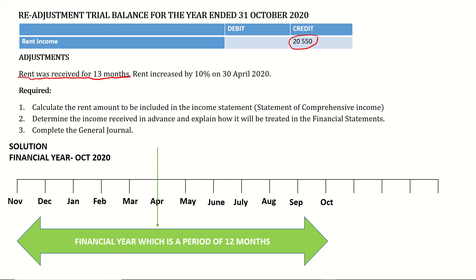Rent was increased by 10 percent from the 30th of April, meaning from May onwards it was 110 percent of the original amount. We need to calculate the increase so we can calculate the rent received for the extra month — the first of November 2020 — which falls outside our financial year and must therefore be removed.